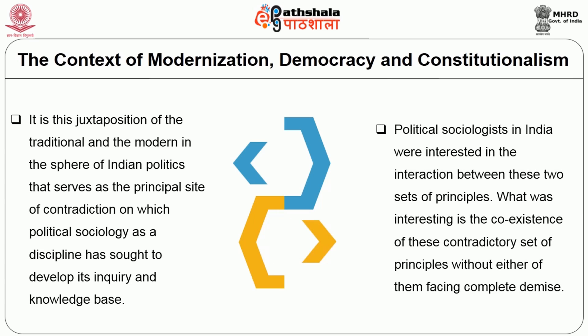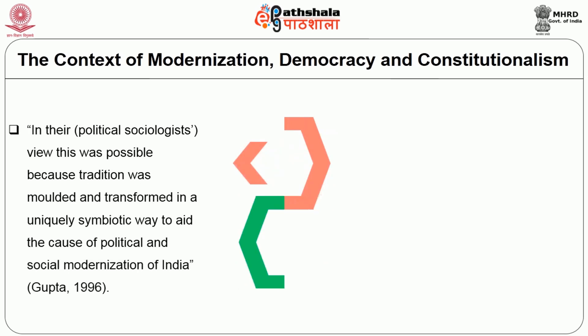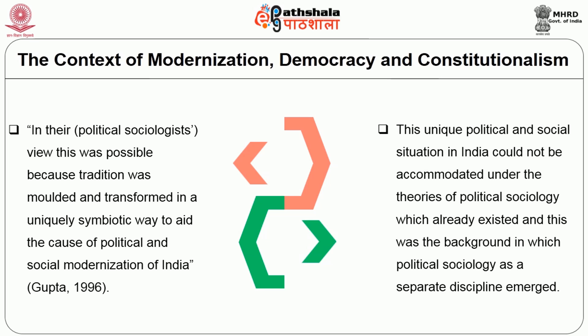Political sociologists in India were interested in the interaction between these two sets of principles. What was interesting was the coexistence of these contradictory set of principles without either of them facing complete demise. This was possible because tradition was molded and transformed in a uniquely symbiotic way to aid the cause of political and social modernization of India. This unique political and social situation in India could not be accommodated under existing theories of political sociology, and this was the background in which political sociology as a separate discipline emerged.